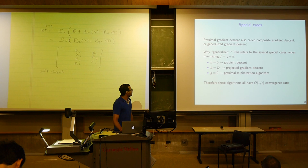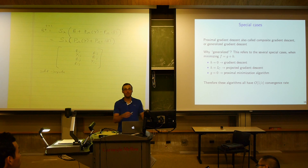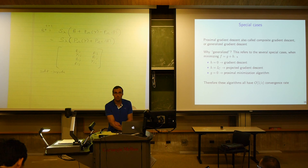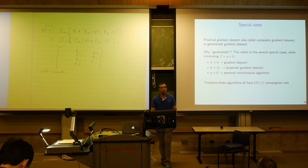Projected gradient descent: minimizing g over a closed convex set C is the same as minimizing g plus the indicator of C. The prox of the indicator function is just projection onto C, because minimizing 1 over 2t times the norm of x minus z squared subject to z in C is just the nearest point projection onto C, independent of t. All these algorithms have a 1 over epsilon convergence rate because they are special cases of proximal gradient.